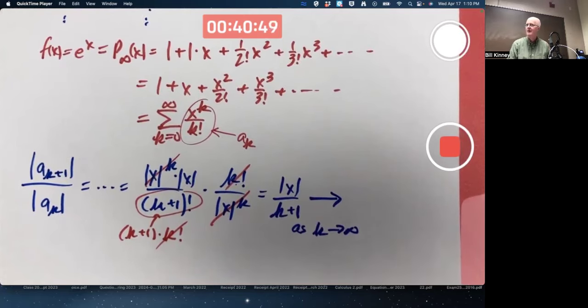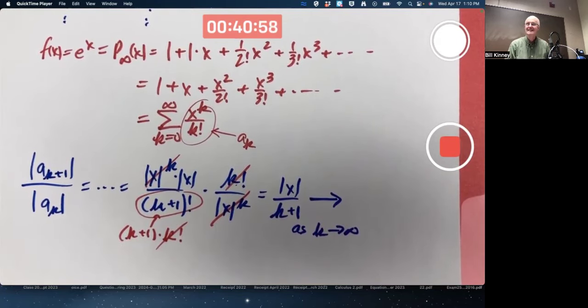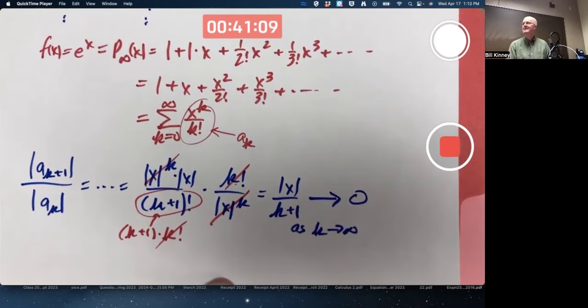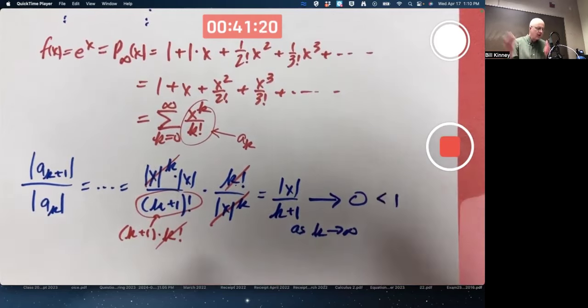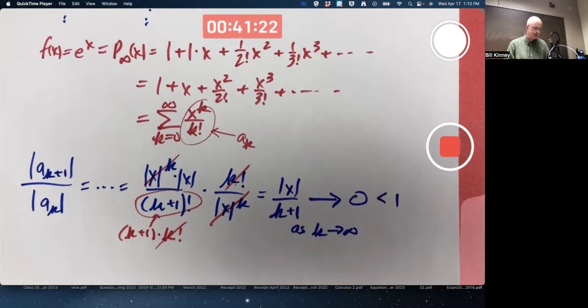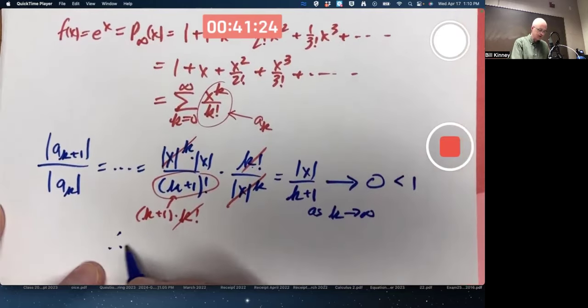What if x is 10? It'd be 10 over k plus 1. What does that approach? Come on. Somebody must know. Zero. If x was a Google or a Googleplex, a Googleplex over k plus 1 still approaches zero. Doesn't matter how big x is. When you do this ratio test calculation, you think of x as fixed. It's k that's changing here. This goes to zero, which is less than 1, no matter what x is. Therefore, the series converges for all x.